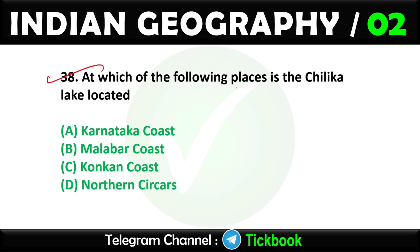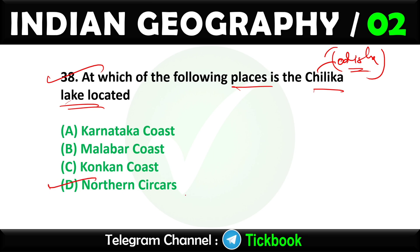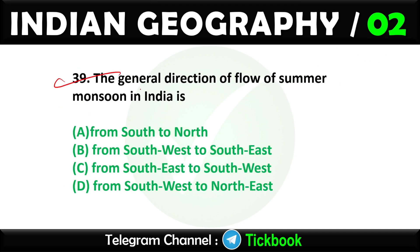Question thirty-eight: At which of the following places is the Chilika Lake located? Easy question — Chilika is located in Odisha. The right answer will be D: Northern Sea circles. Question thirty-nine: The general direction of flow of summer monsoon in India is. Option number D: from southwest to northeast.